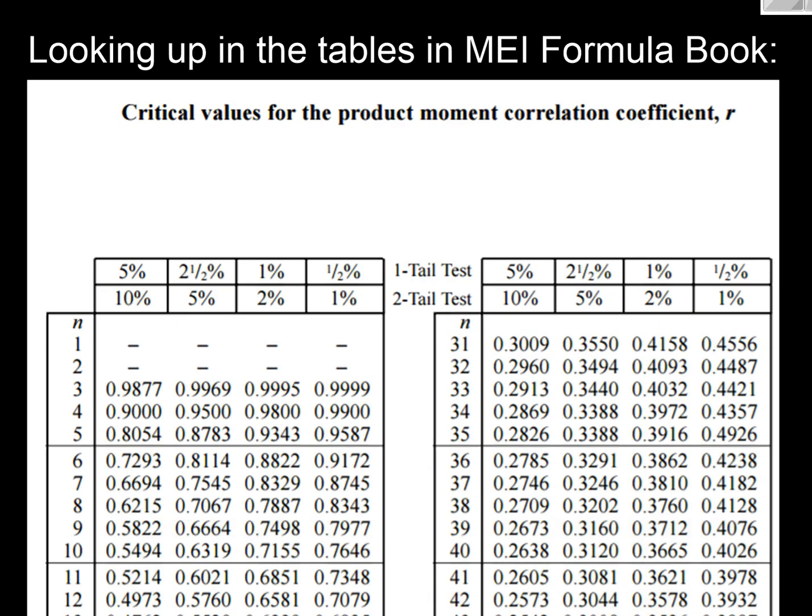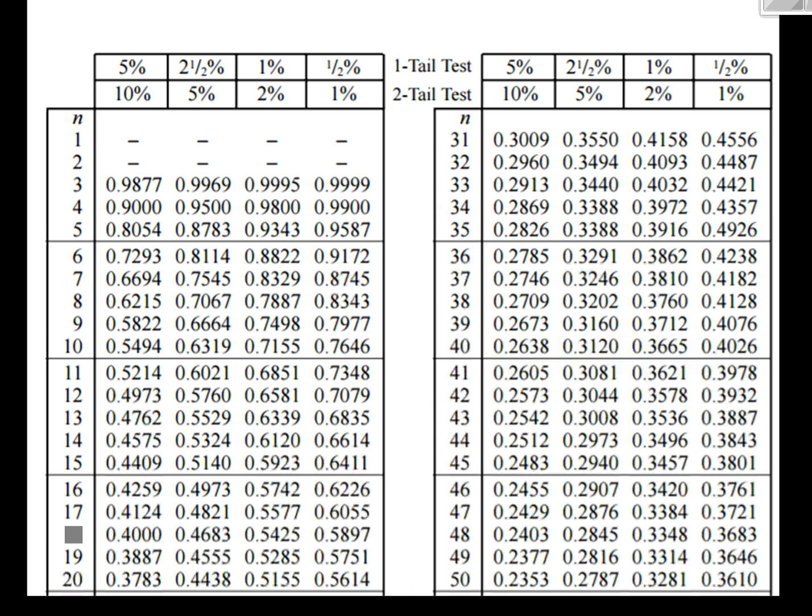And what we need is from the MEI formula book on page 21, we're going to get the data here, the critical values. So let's have a look. So first thing we need to know is the number of items of data. Now here we had 20 points, we've got 20 teams, 20 points. We now need to know, it's a two-tailed test as opposed to a one-tail and our significance level is 5%. So we're just going to work out where these two intersect, the row for 20 and the column for 5% on a two-tail. And we get a critical value of 0.4438.